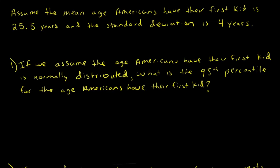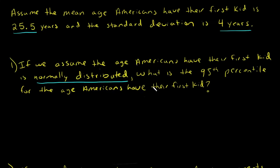In this video I'm going to discuss how to find percentiles using the normal distribution table. Let's go ahead and assume that the mean age that Americans have their first kid is 25.5 years and the standard deviation is 4 years. In this first example we are going to assume that that age is normally distributed, and we're going to find the 95th percentile for the age that Americans have their first kid.